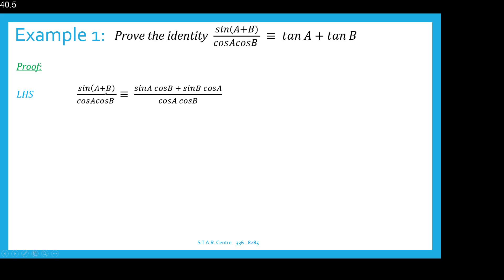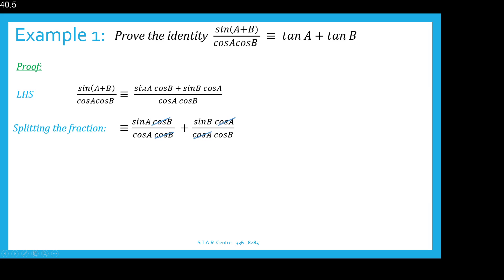Starting with the left hand side: sine of A plus B over cos A cos B. Using the compound angle formula for the numerator, sine of A plus B can be expressed as sine A cos B plus sine B cos A. If we split up the fraction, we have sine A cos B over the denominator plus sine B cos A over the same denominator. We can then cancel the cos B in the first fraction and the cos A in the second fraction.